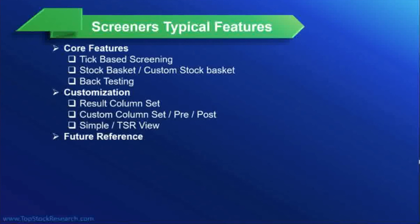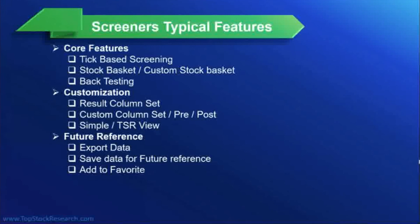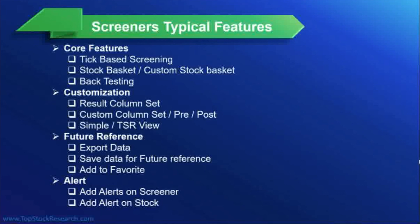Once you screen the results, you may want to keep them for future reference. There are a few ways to save or store these things: you can export the data as CSV or XLS, or you can save this information as a portfolio. You can also add alerts or add to favorites. For example, if you have a screener looking for stocks in the oversold zone for more than five days, you can set an alert on that screener. Or if you find a stock based on your research, you can add an alert on a specific stock of that index.